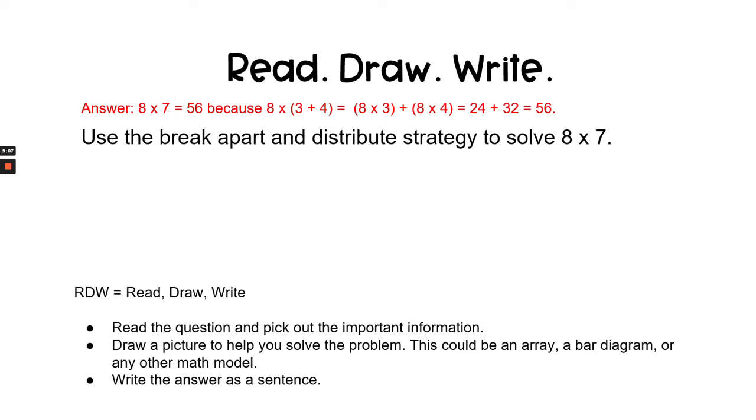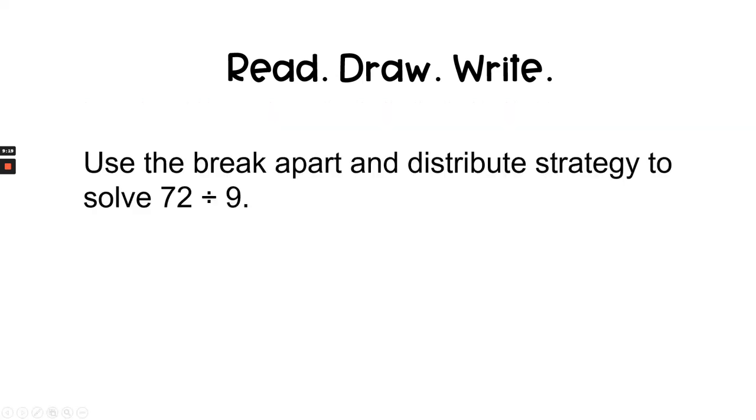The answer is 8 times 7 equals 56. There's another way we could have done it, 8 times 3 plus 4, that's another way that we could have solved it using the break apart. Now it's your turn to do a read-draw-write problem on your own. Here's the question: use the break apart and distribute strategy to solve 72 divided by 9. Go ahead and pause the video, answer the question, and check your work. Do your very best work and I'll see you in the next lesson.